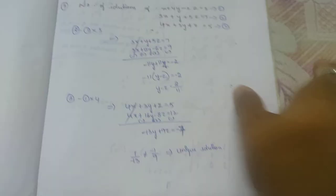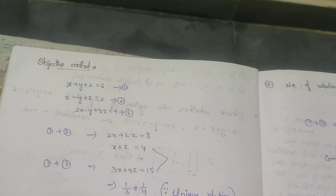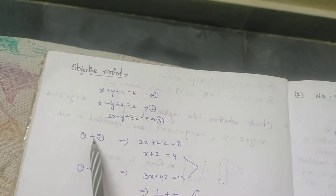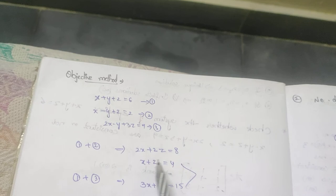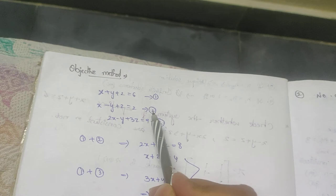Objective method for the same question: x + y + z = 6, x − y + z = 2, 2x − y + 3z = 9. Eliminate y by adding equations 1 and 2: 2x + 2z = 8, giving x + z = 4. Then using equations 1 and 3, eliminate y: 3x + 4z = 15.